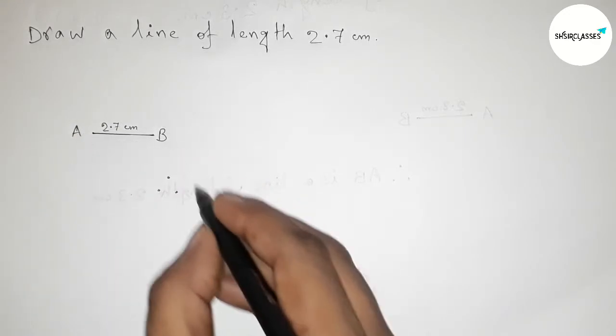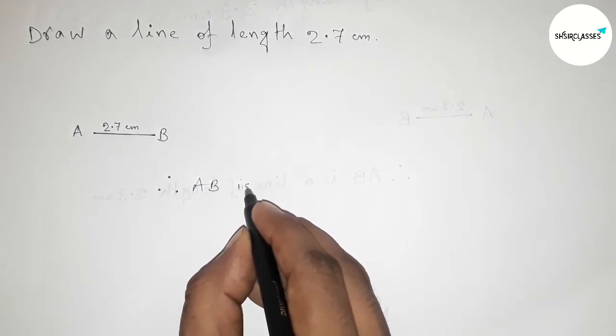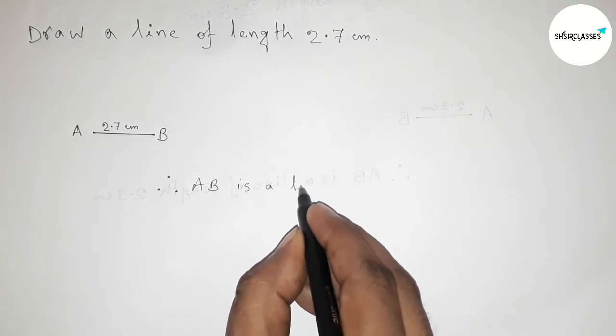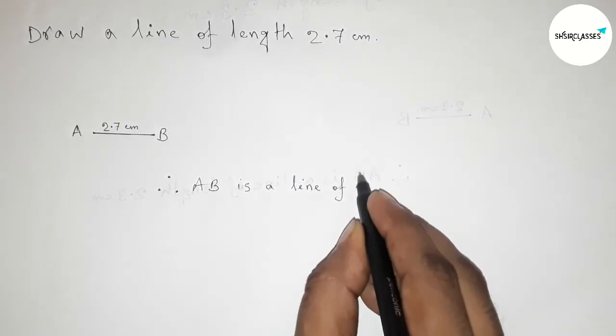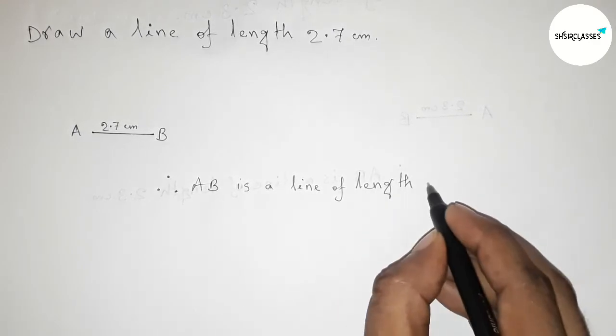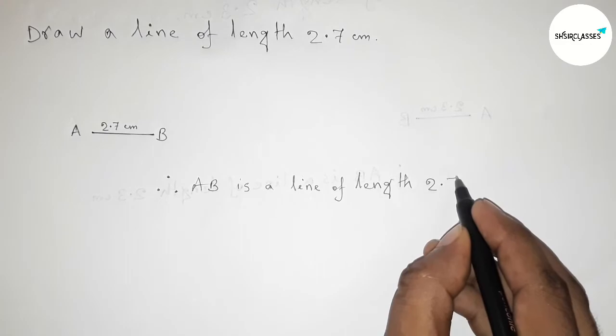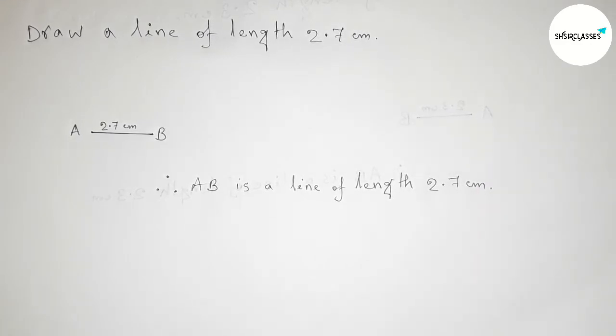Here AB, so AB is a line of length 2.7 centimeter, and by this way you can draw a line of length 2.7 centimeter. So that's all, thanks for watching. If this video is helpful to you, then please share it with your friend. Thanks for watching.